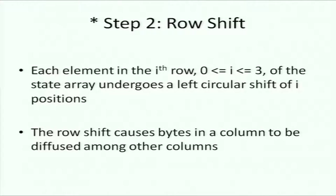In the row shift step, each row is shifted. The first row is not shifted, but the i-th row is shifted by i positions to the left — a left circular shift. So the second row shifts by one, the third by two, and so on. This implements the permutation or transposition part of the cipher.